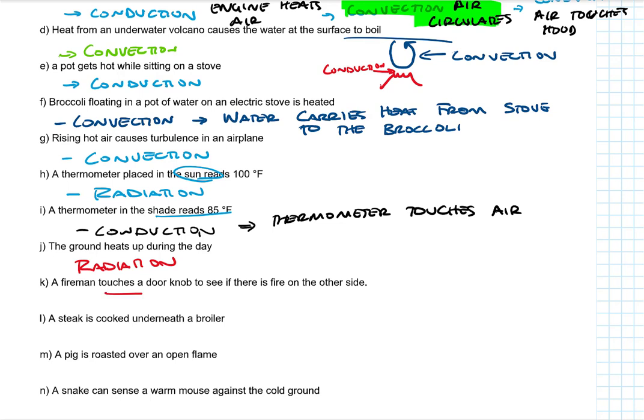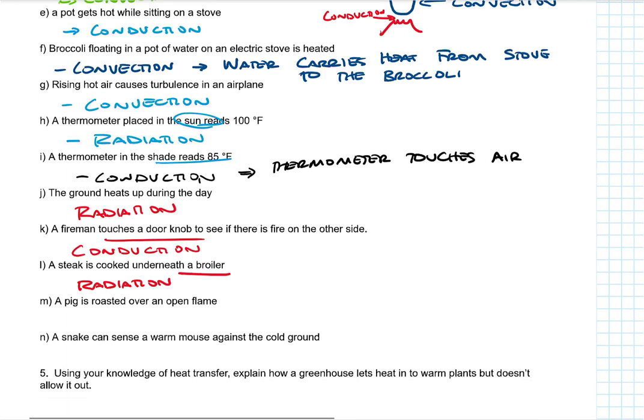The fireman touches a doorknob to see if there's a fire on the other side. Conduction. A steak is cooked underneath a broiler. A broiler is that hot thing, and it's underneath. So it's not going to be convection because that hot rises. What's going to happen here is radiation.